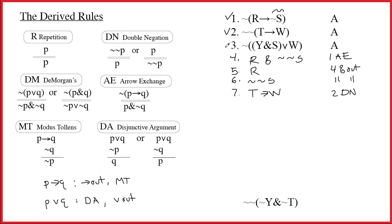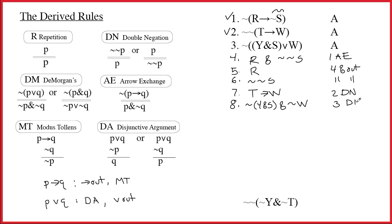Working down to line three: single tilde outside parentheses, so it's De Morgan's or arrow exchange. The wedge is the main connective inside, so we're doing the first version of De Morgan's. When doing De Morgan's, you switch the connective — wedge to ampersand — and then distribute the tilde by adding a tilde to both halves. Y and S is the P part, so we get tilde Y ampersand S. Then add a tilde to Q, which gives tilde W. Justification: line three, De Morgan's. Thank you, Augustus De Morgan, pioneer of propositional logic.